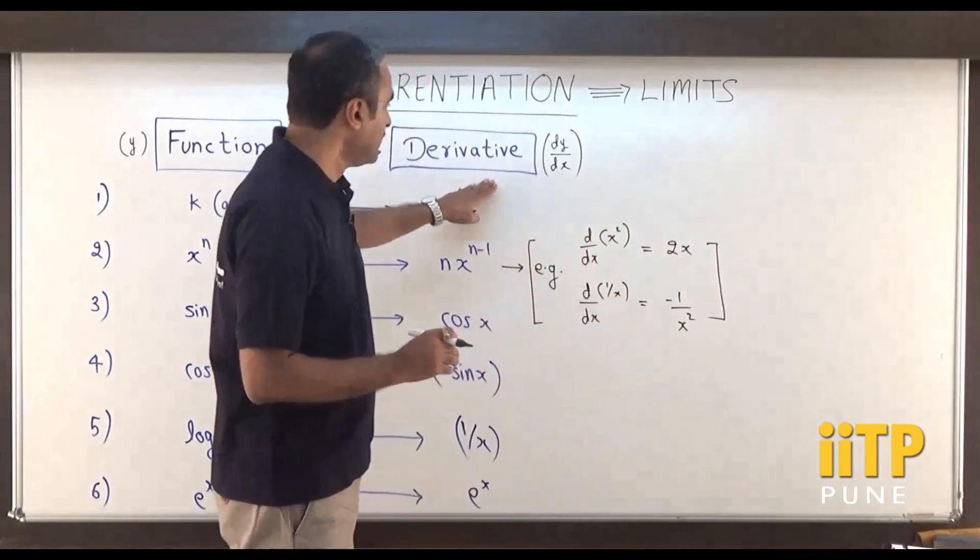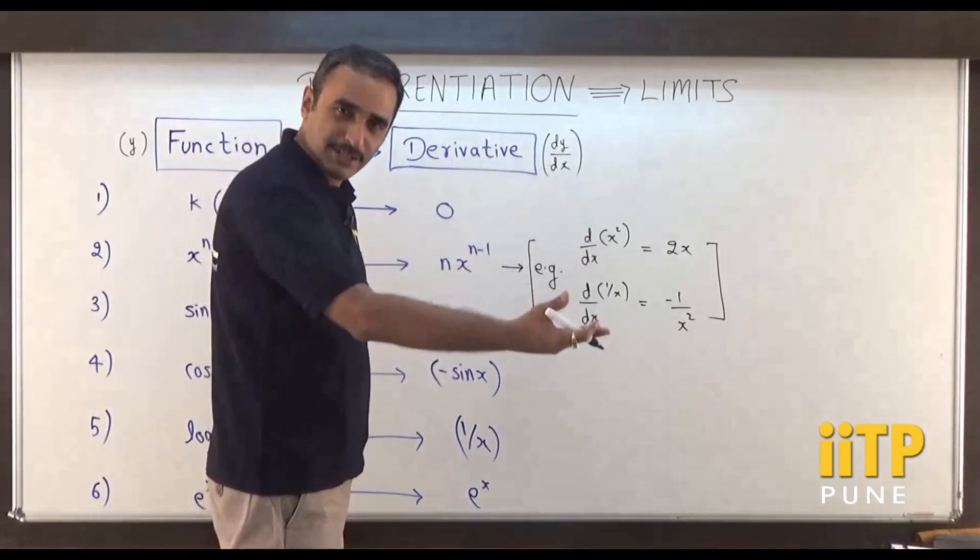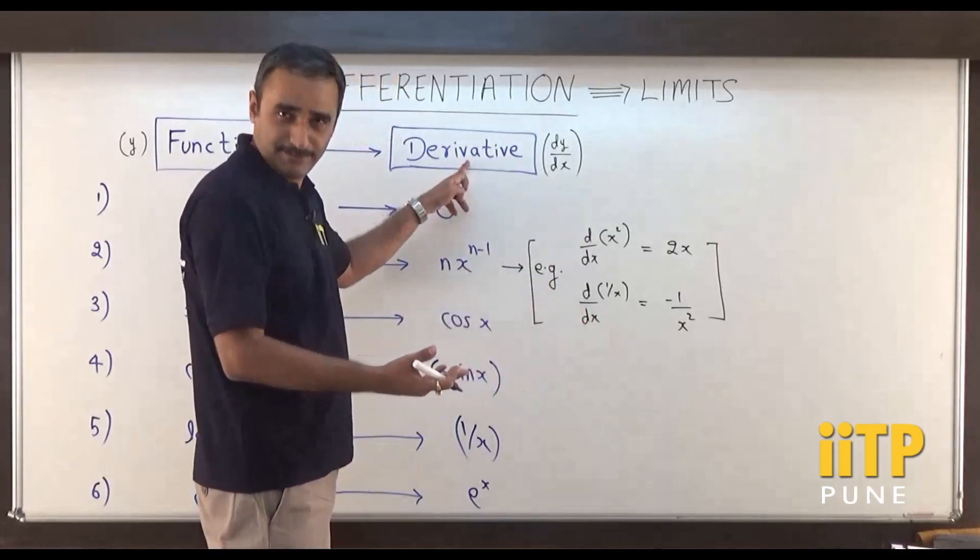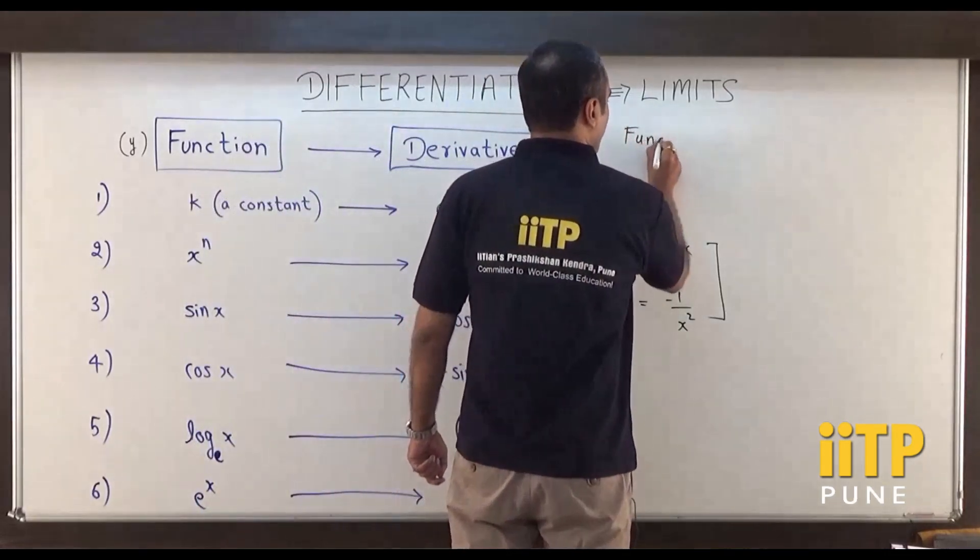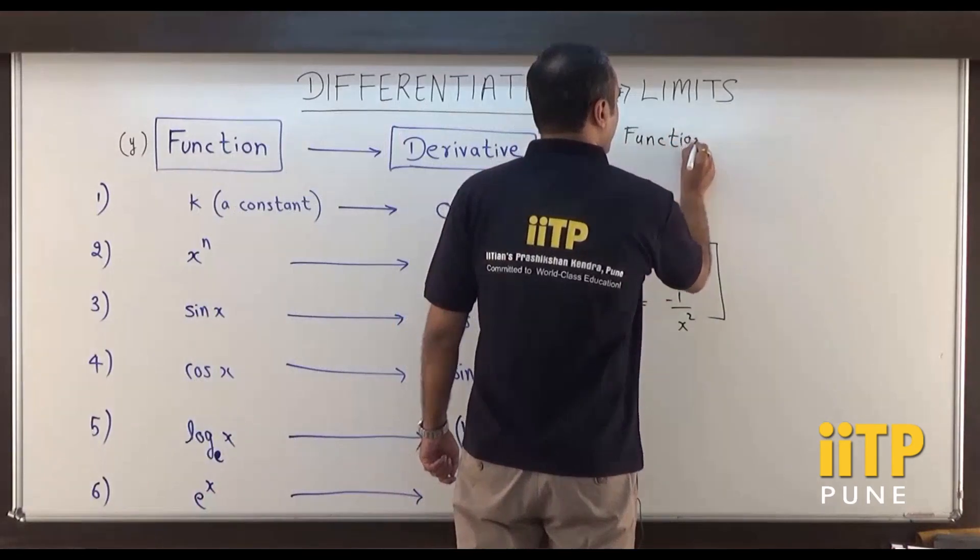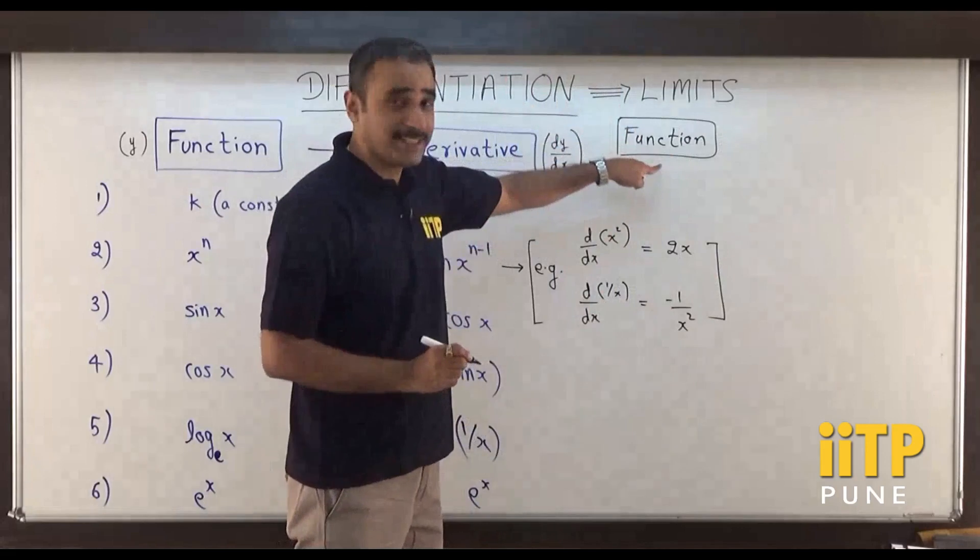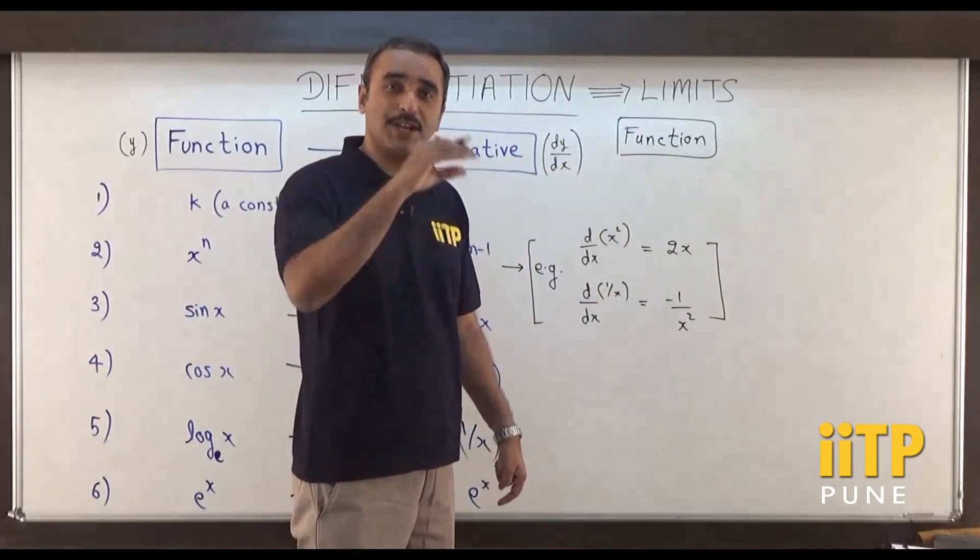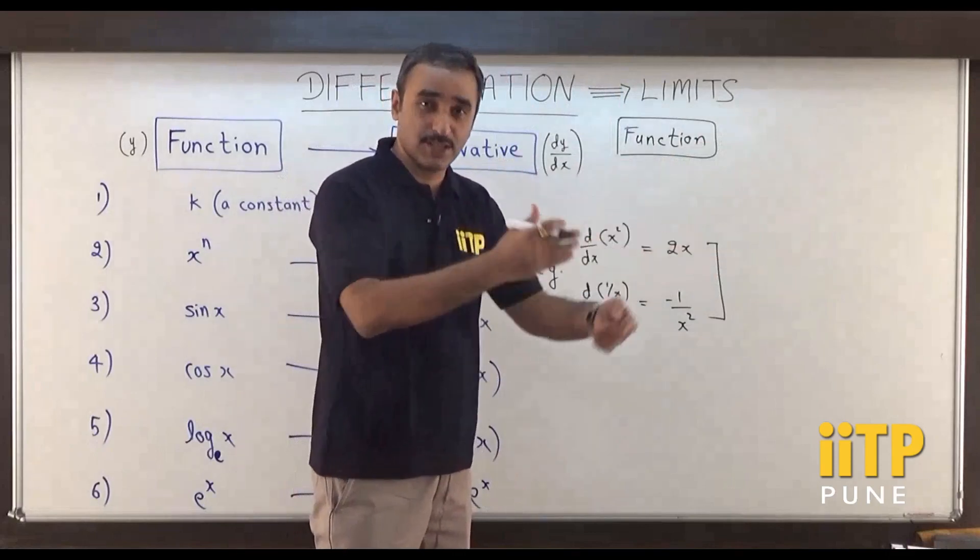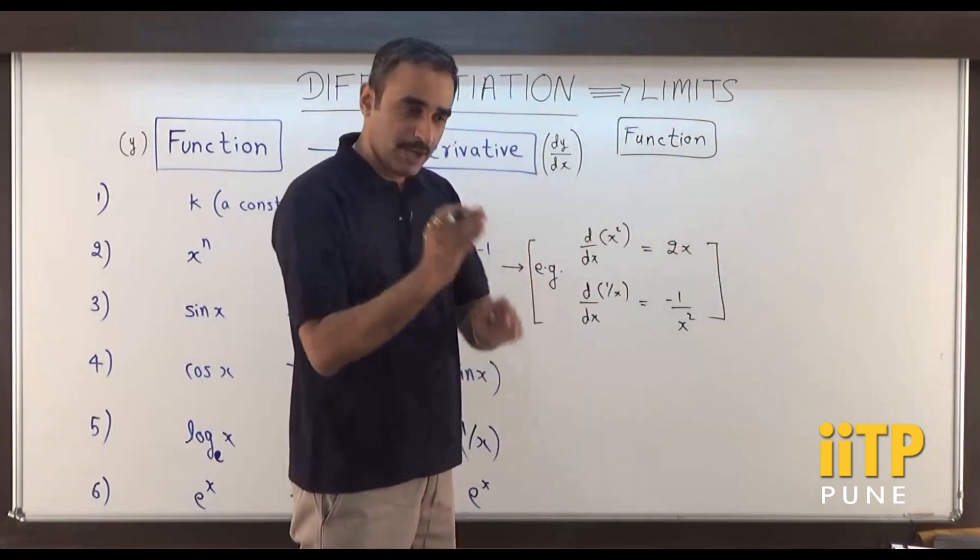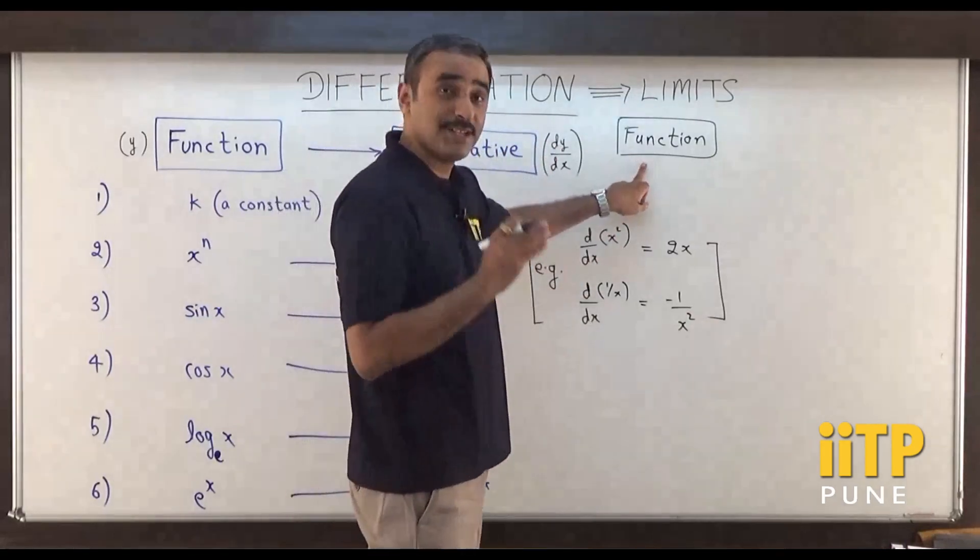And if the function can be differentiated, then what you get after differentiating is called the derivative. If you have a function, on differentiating this function, differentiation is like an operation. Like we have addition, subtraction, multiplication, division as operations, square root as an operation, we operate on a mathematical entity. Likewise, differentiation is an operation.